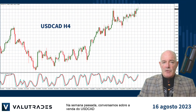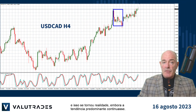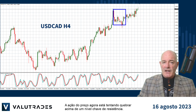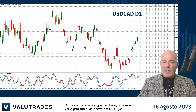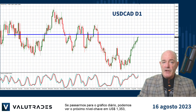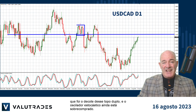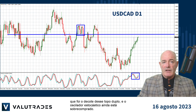Last week we talked about selling USDCAD, and it did come true even though the prevailing trend continued. Price action is now trying to break above the key level of resistance. If we move out to the daily chart, we can see the next key level at $1.353, which was the neckline of this double top, and the stochastic oscillator is still overbought.